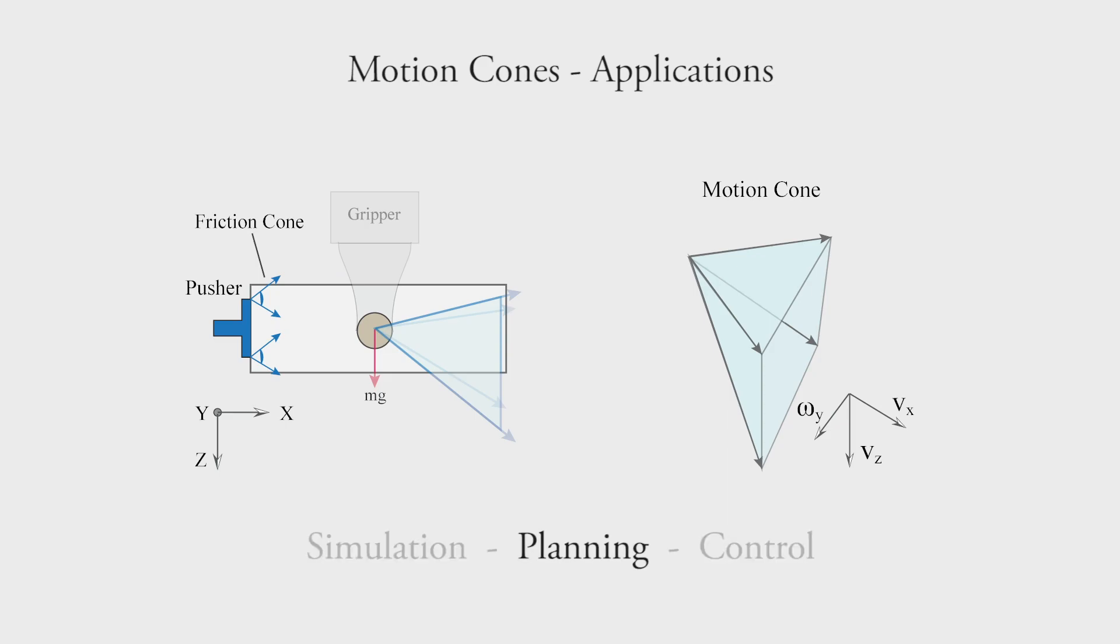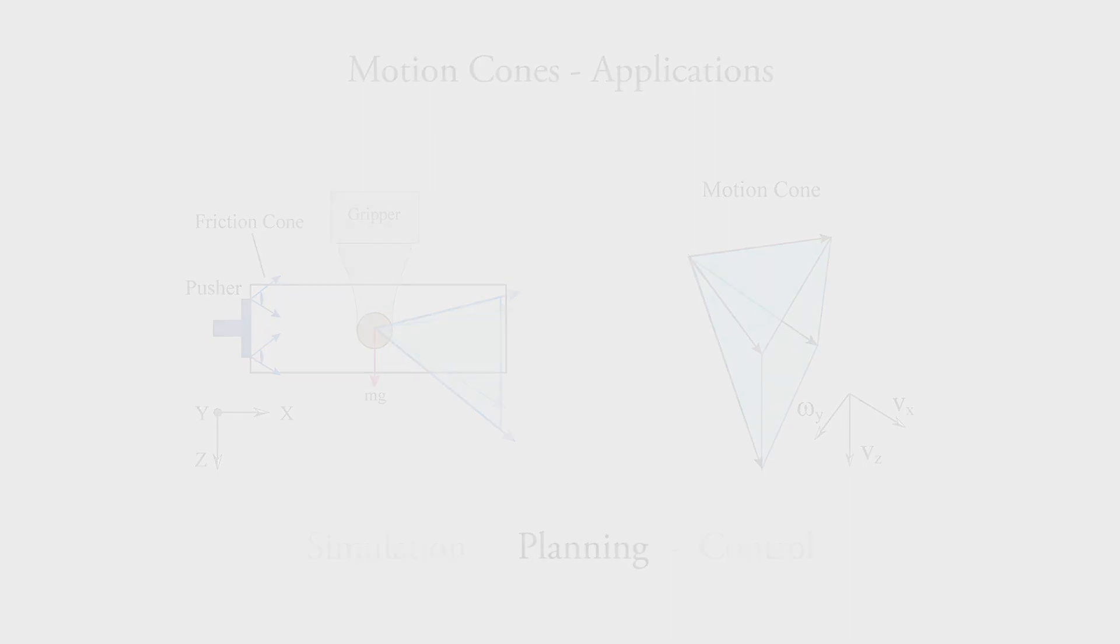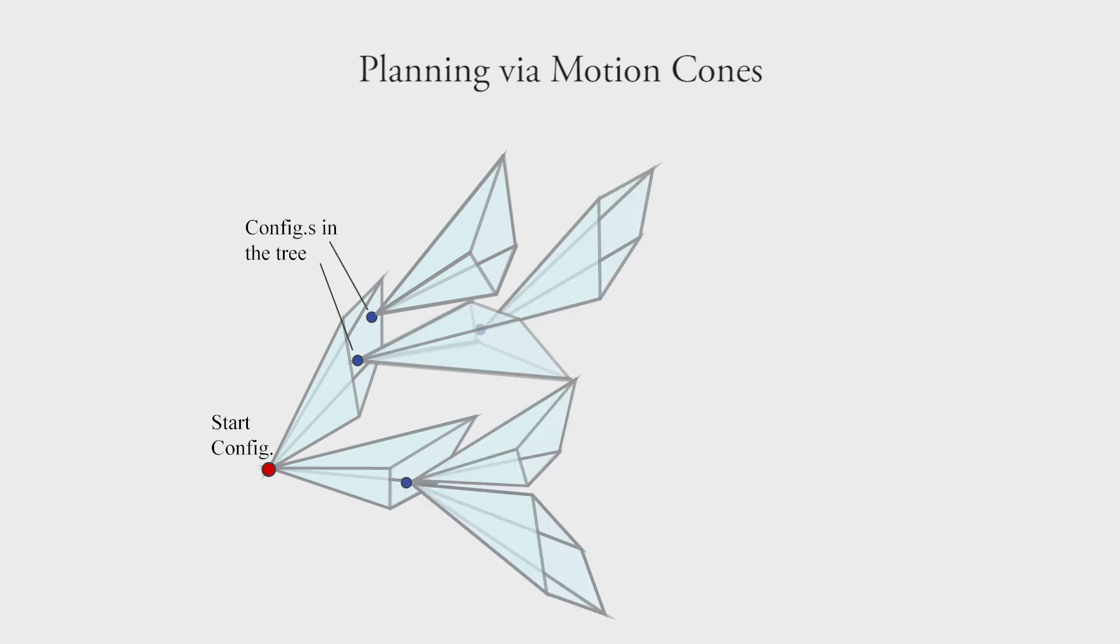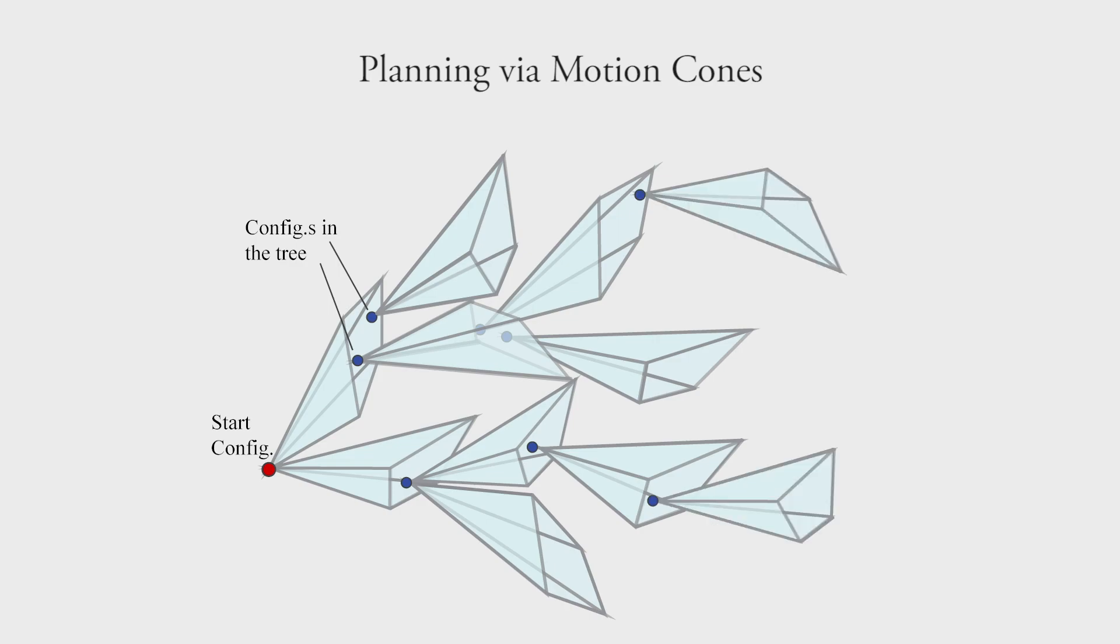In this paper, we explore their application for planning in-hand manipulations in a sampling based planning framework. Specifically, we use the reachability bounds from the motion cones to propagate an exploration tree. Instead of solving the complex dynamics of pushing to reach the sampled grasp configurations, we project those configurations on the motion cones and grow the tree via the motion cones. A path in this tree provides a pushing strategy to move the object to the goal grasp.